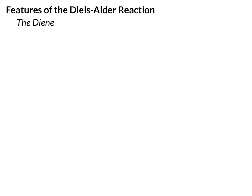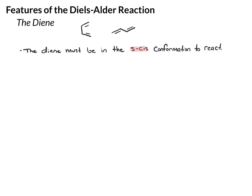One thing you may have noticed in some of these examples is that I've often drawn the diene in a very particular way, whereas for 1,3-butadiene, if I asked you to draw it, you would probably draw it differently. There's a reason for that — what I've been doing is drawing the diene in its reactive conformation. For the Diels-Alder reaction, the diene must be in what's known as the S-cis conformation to react. The term S-cis means 'single bond cis-like,' and this will make more sense when I draw a picture.